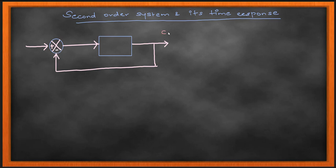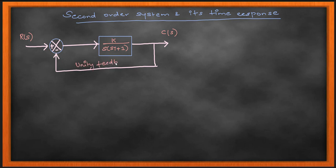Since we are talking about time response, you can use your second order system to get sinusoidal and oscillatory response. Whereas for your first order system, you cannot get a sinusoidal response — you can get more of an exponential, linear, or constant response, but not a sinusoidal response. Whereas in your second order system, you can expect the output to be sinusoidal; the time response can be sinusoidal.